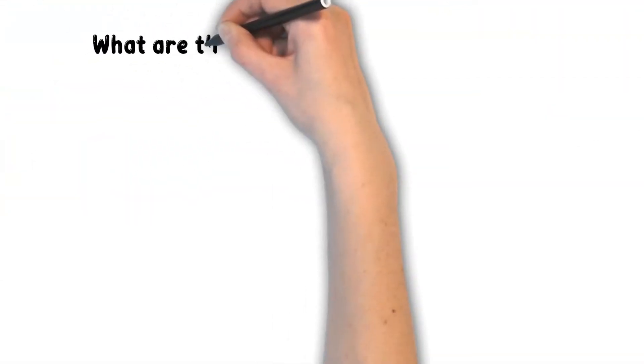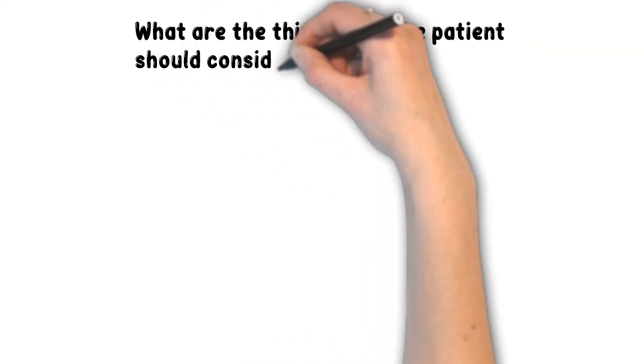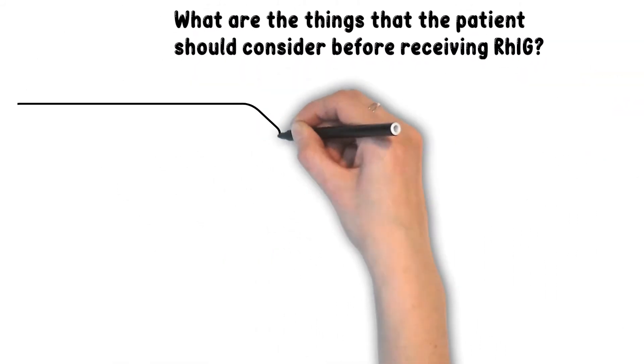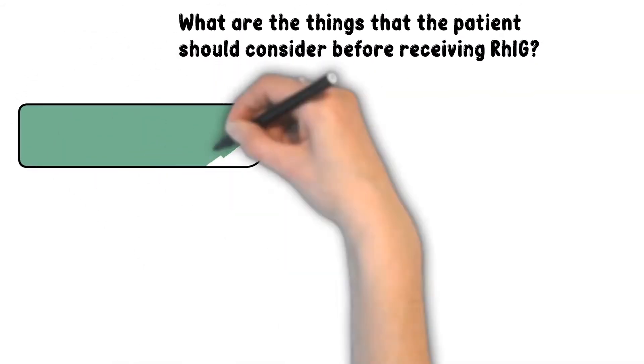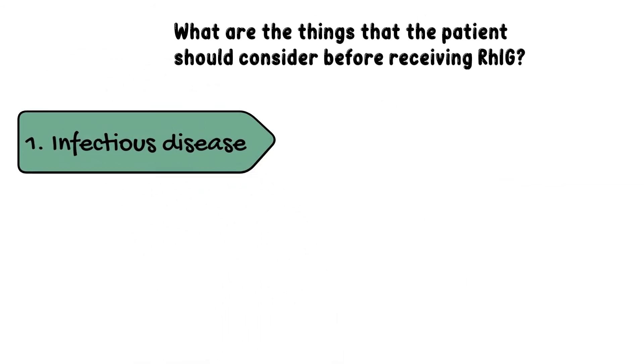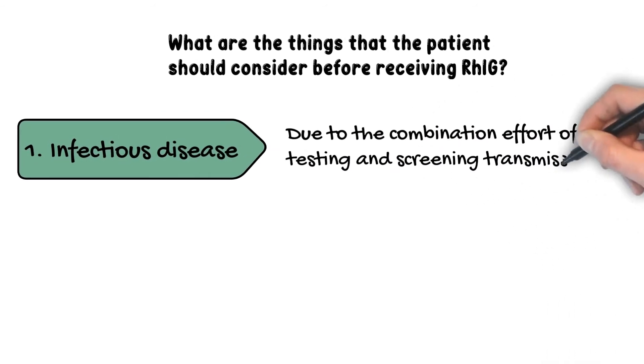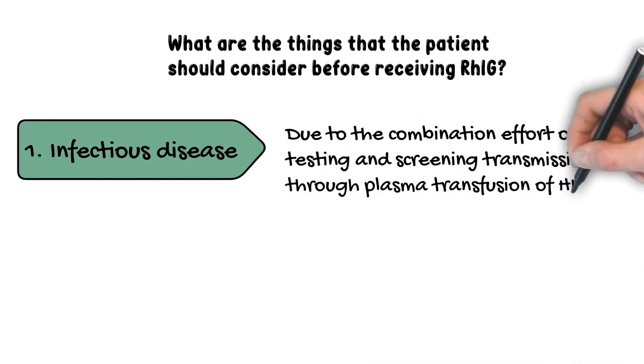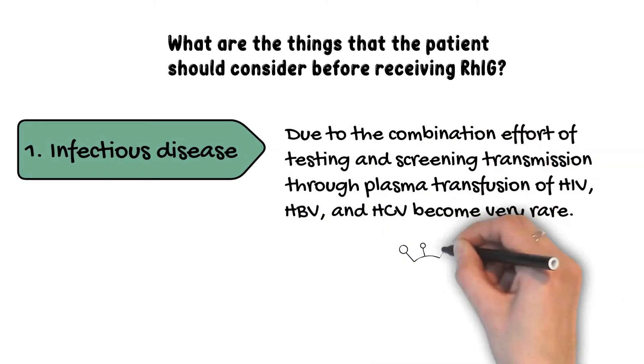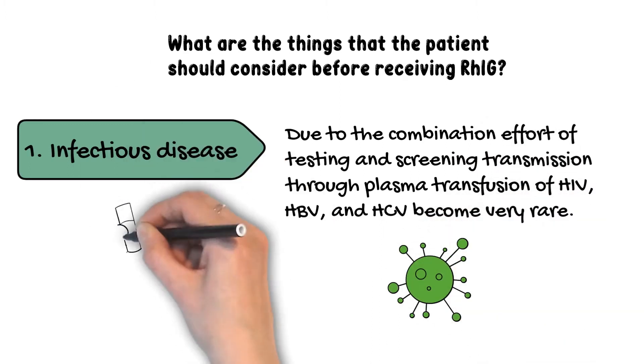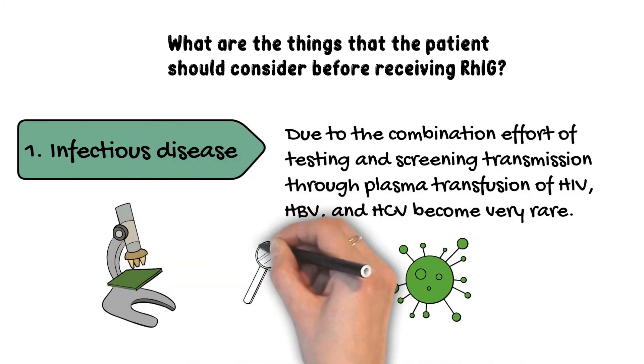What are the things that the patient should be considered before receiving RHIG? RHIG is a human product. It is a purified human plasma containing anti-D. Plasma comes from donors who go through infectious disease screening and testing. It is heavily regulated by FDA. However, these donated plasma still carry risk for transmitting infectious disease.